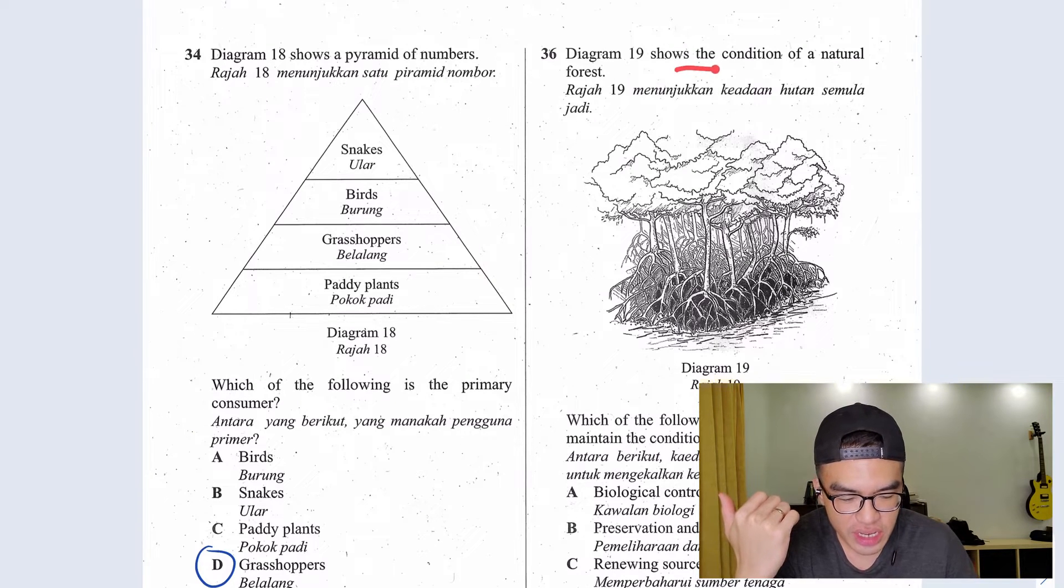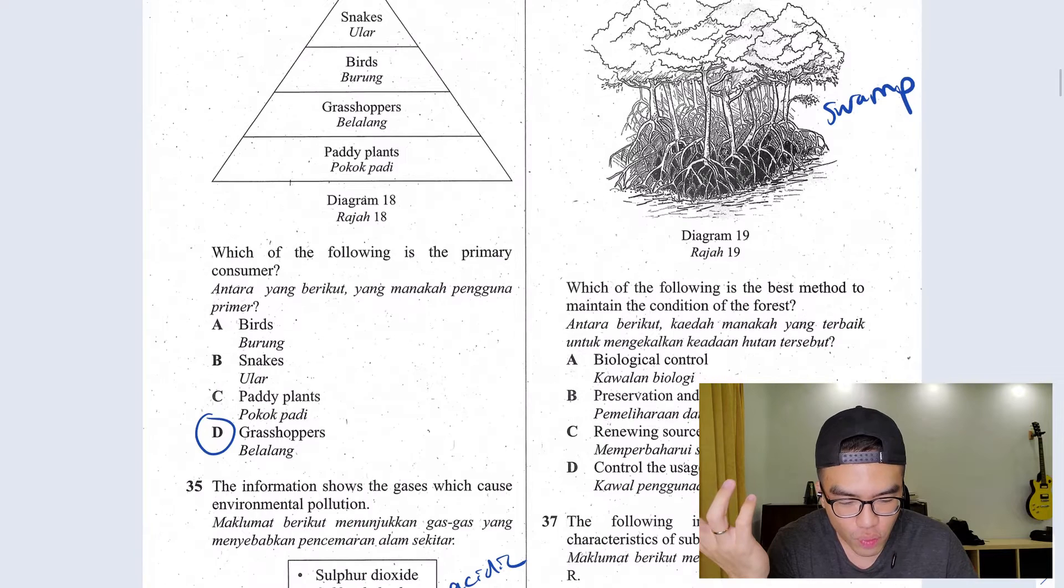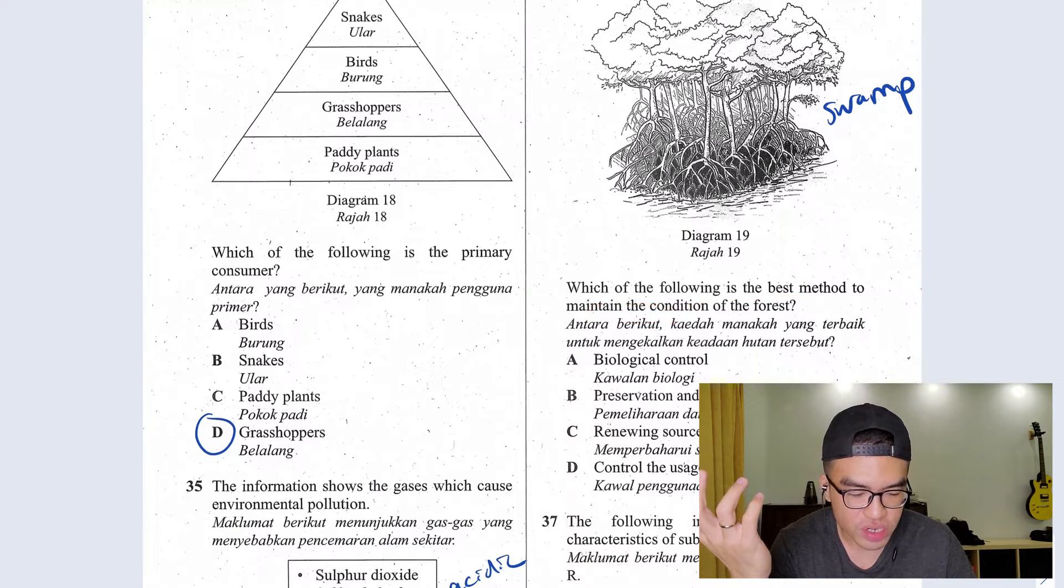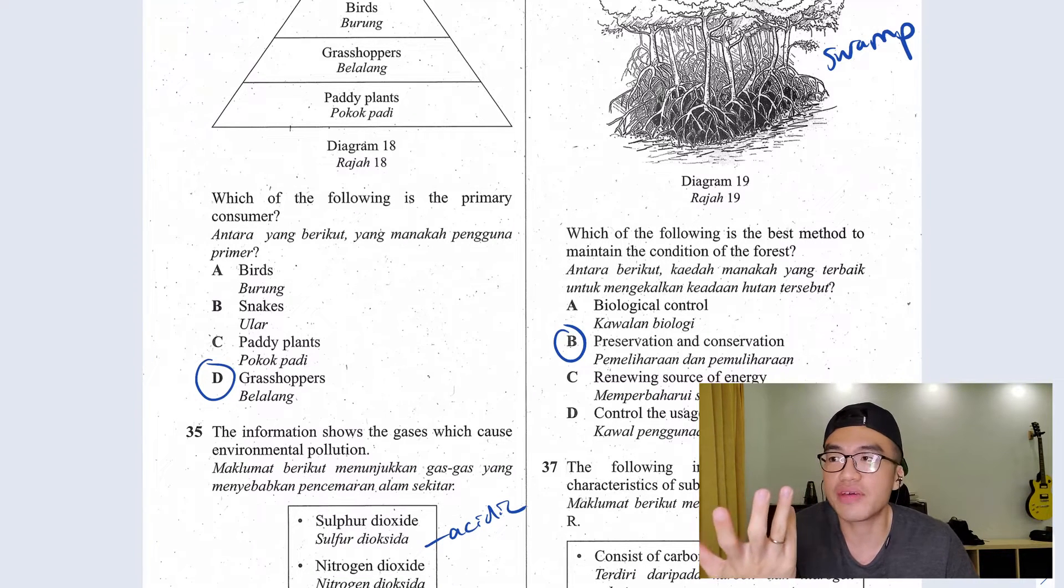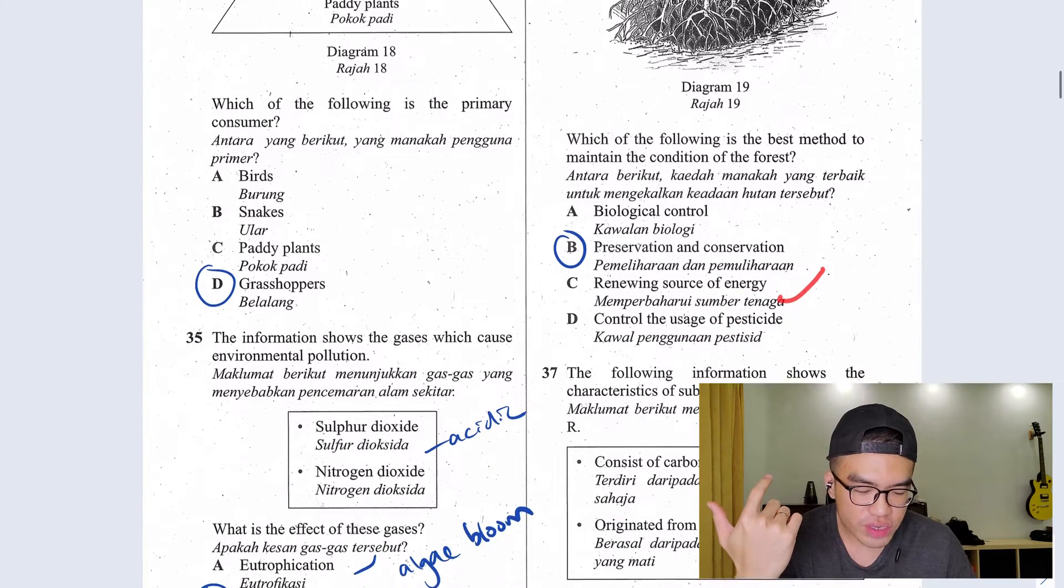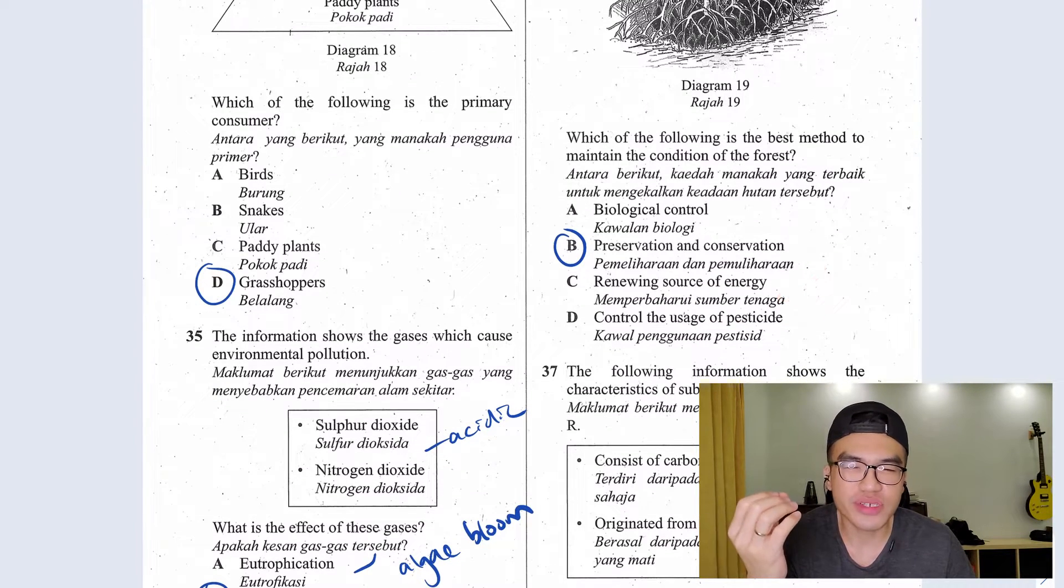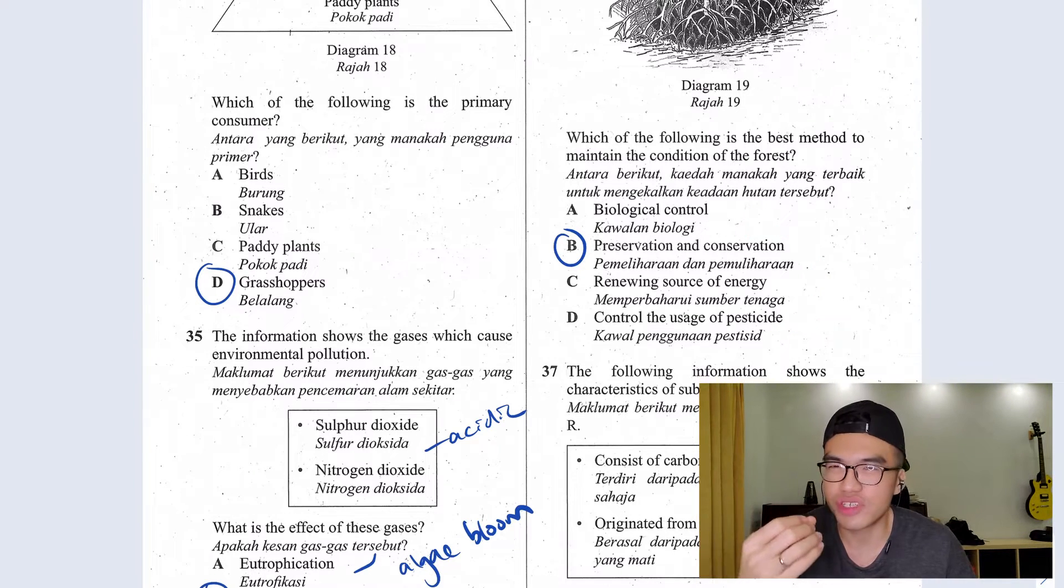Question 36 shows the condition of a natural forest. As you can see here, this is a swamp area. Which of the following is the best method to maintain the condition of the forest? There's nothing much you can do here besides preservation and conservation. Something like having a forest reserve. Biological control, this is mostly for farms. Renewing sources of energy, this was mostly related to your fossil fuel. Control the usage of pesticide, again this is related to your biological control which is in your farm.